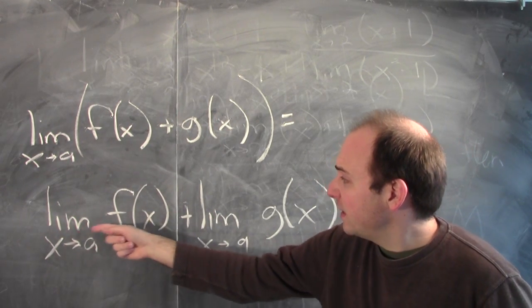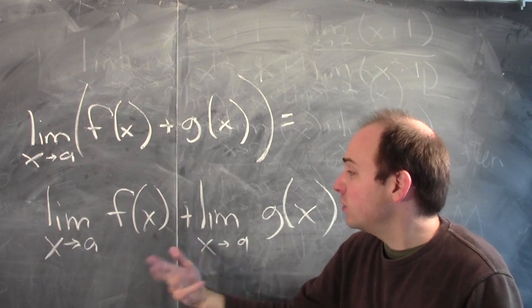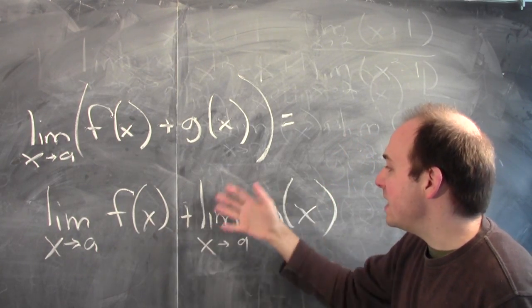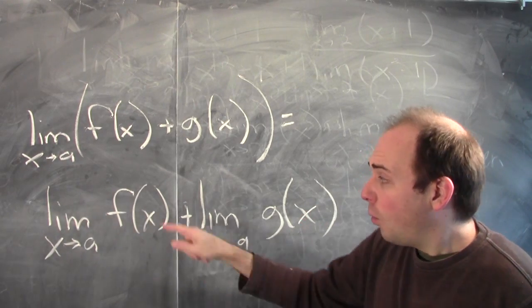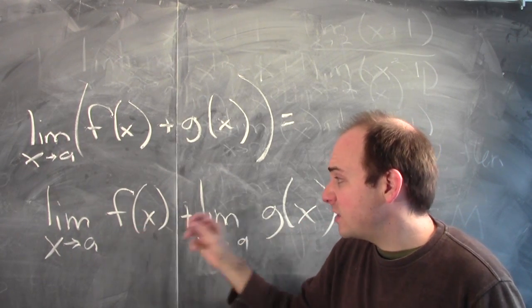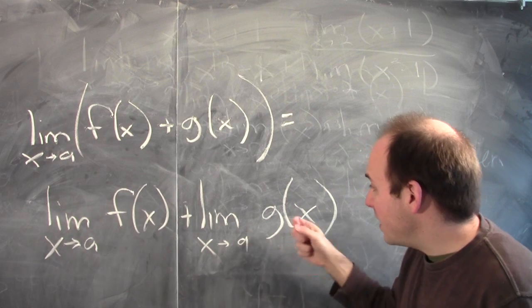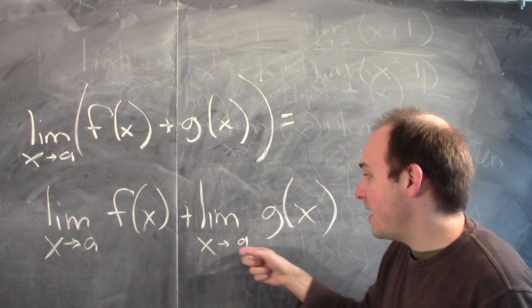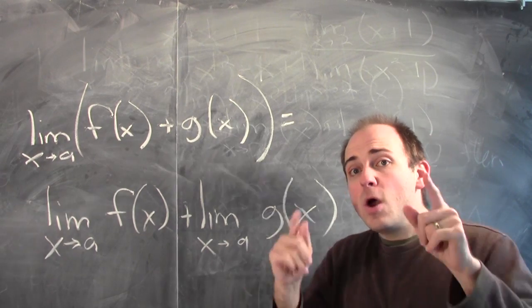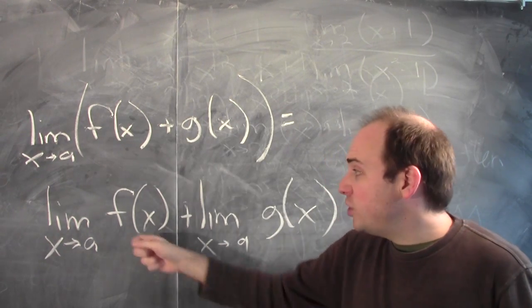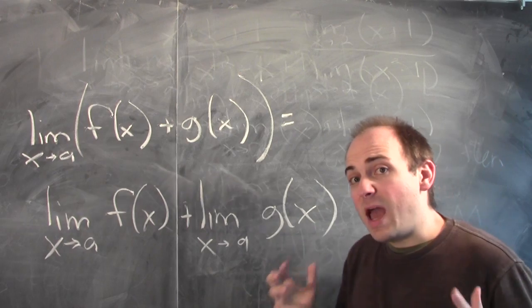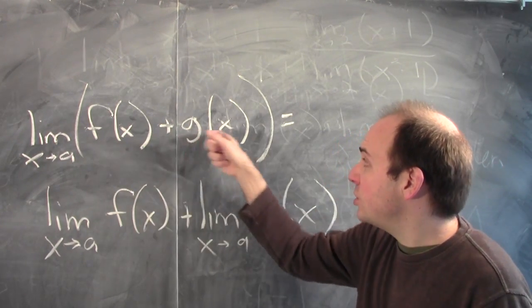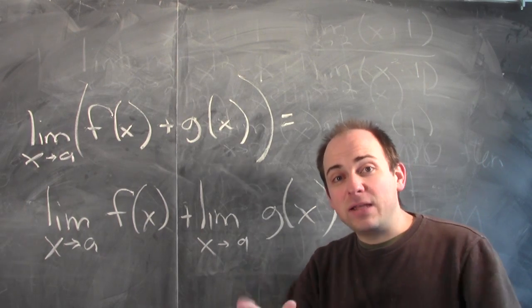Suppose you tell me that the limit of f of x as x approaches a is equal to l, and the limit of g of x as x approaches a is equal to m. That really is a promise that you can make f of x as close to l as I like, and a promise that you can make g of x as close to m as I like, as long as x is close enough to a. But if you can promise me that, then I can promise you that f of x plus g of x is as close to l plus m as you like.